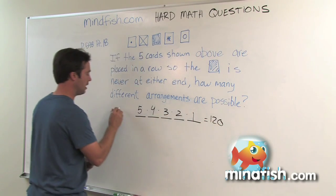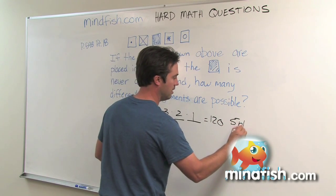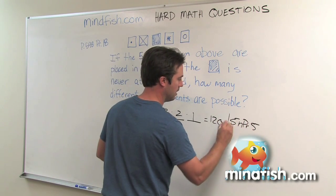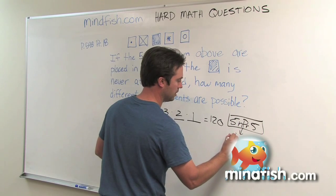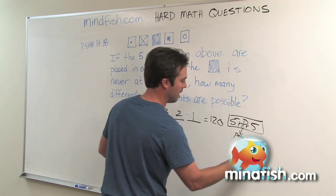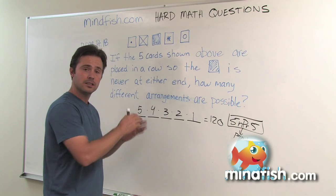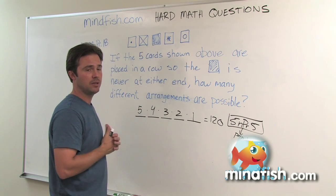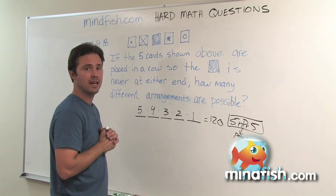And that's what you would get if you typed in 5 NPR 5. NPR, which is permutation, can be found by hitting math, sliding over to probability, and then it should be the second or third button down — NPR.